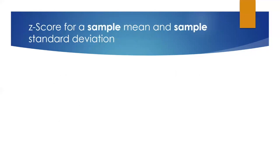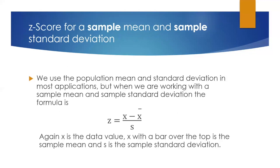To find the z-score for a sample mean and sample standard deviation, we use a slightly different formula. When we're working with the sample, we use x-bar to represent the sample mean and lowercase s is the sample standard deviation. So the formula is z equals x minus x-bar divided by s, where x is the data value.